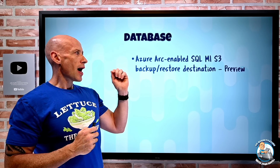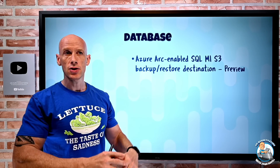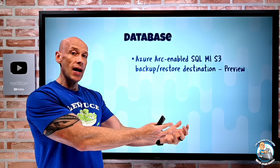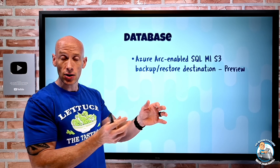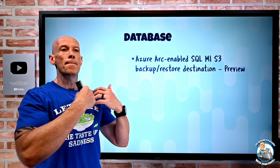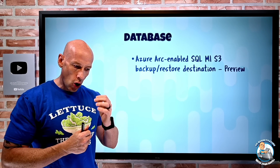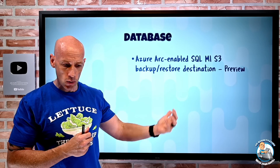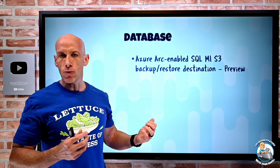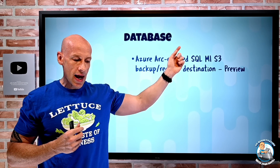On the database side: Azure Arc-enabled SQL Managed Instance. Azure Arc extends the Azure control plane to on-premises and other clouds. With Azure Arc-enabled Kubernetes you can deploy data services including SQL Managed Instance, giving you an evergreen managed patched SQL instance on that Arc-enabled Kubernetes. A new addition is object storage with the S3 protocol — useful for data lake virtualization with PolyBase to query via T-SQL — and you can now backup and restore the Azure Arc-enabled SQL MI to an S3 destination.